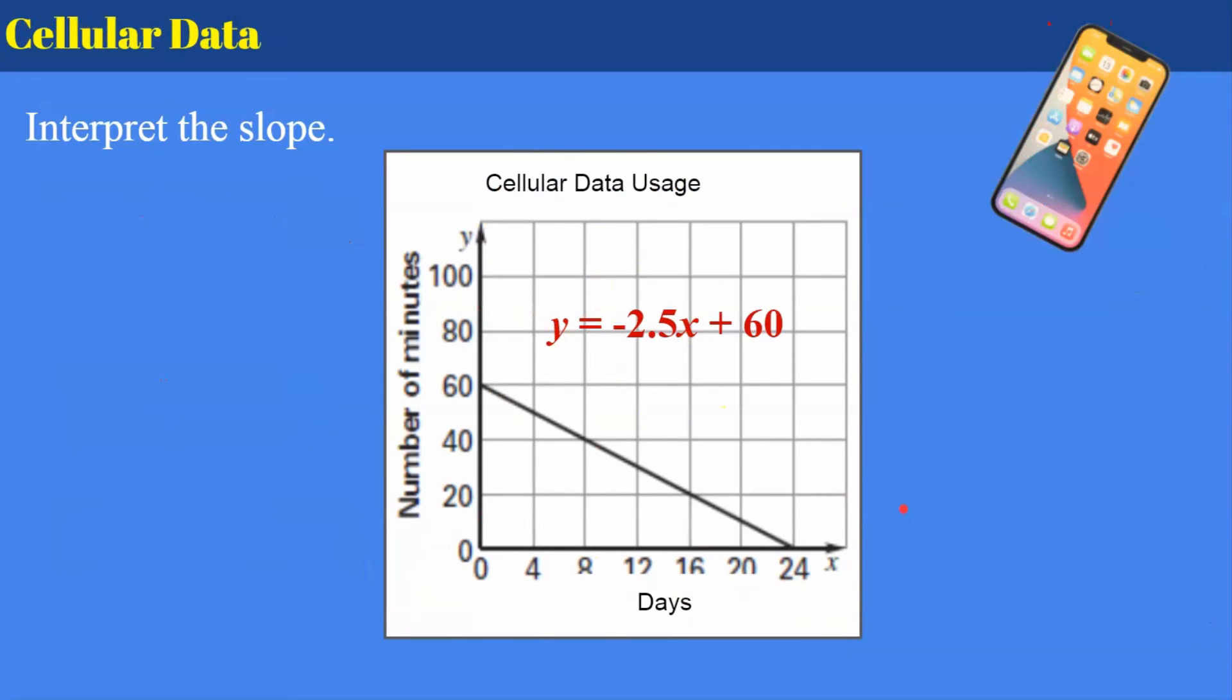Let's talk about cellular data. Okay, be careful. This is a negative slope. So go ahead and pause, write your sentence of interpreting the slope, and come back and hit play when you're ready to check your work.